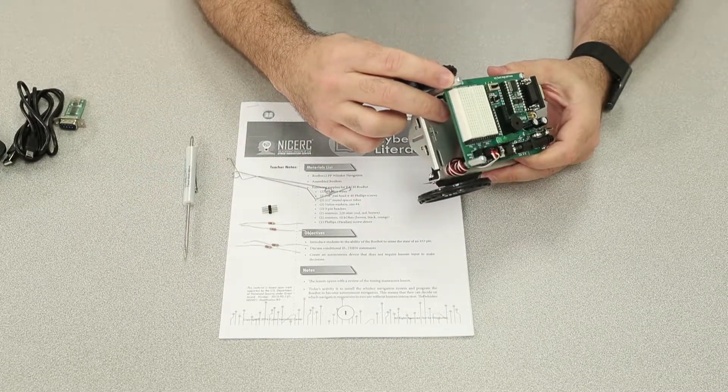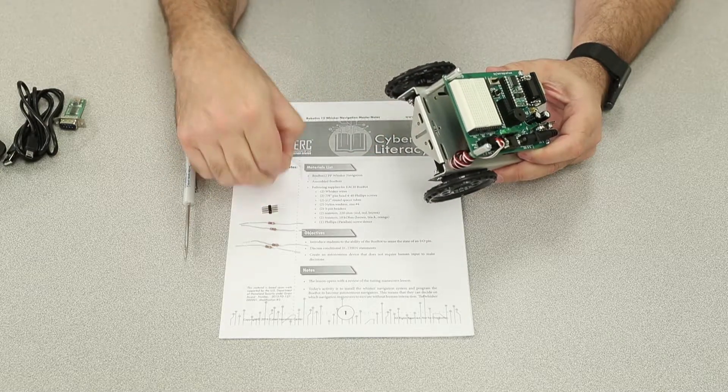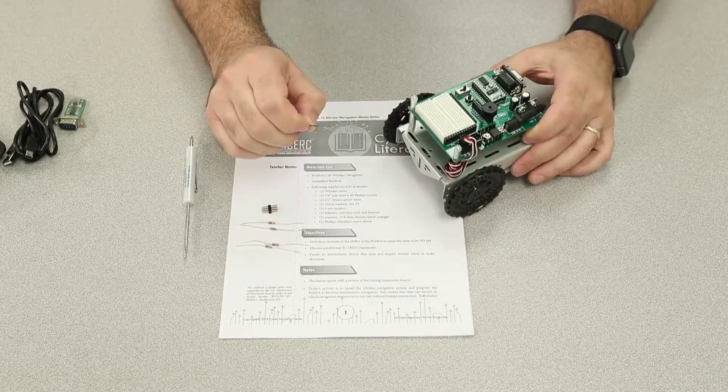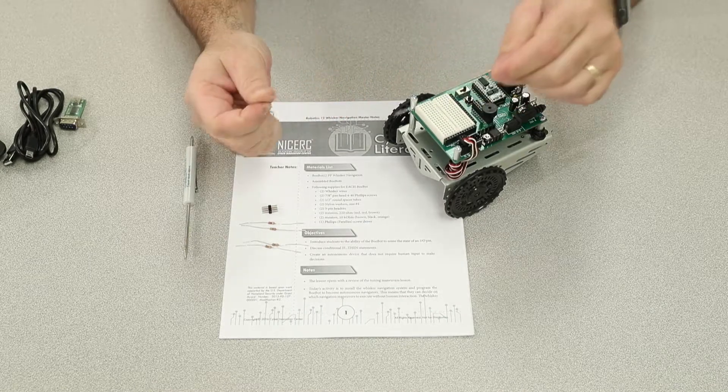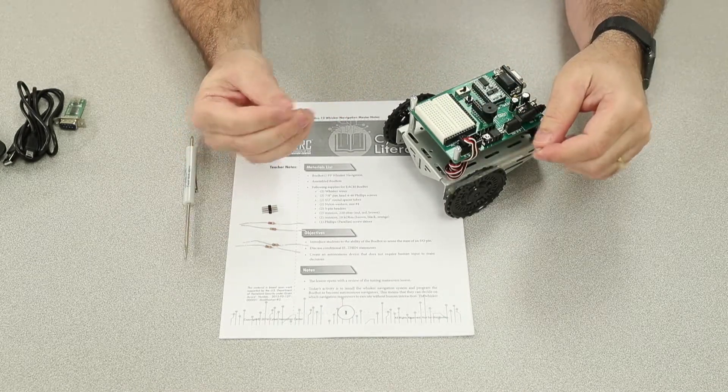So if you're wondering what these nylon washers were for, today's the day. What we're going to do is, we're going to install the washers, we're going to install the wires with the hooks, one above the washers, and one below the washer, like this.